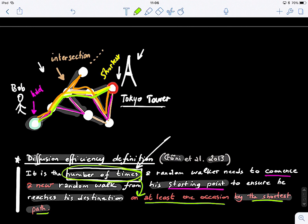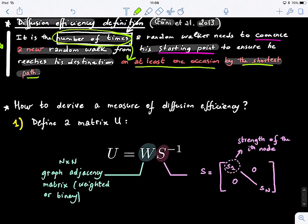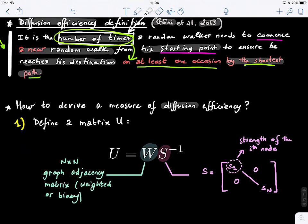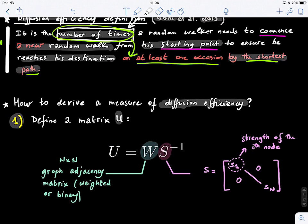There are many ways of formalizing this mathematically. We'll look at this definition and how it is formalized by these authors. The first step is to define a matrix U, which is simply defined as the multiplication of the graph adjacency matrix — whether weighted or binary — by the inverse strength of the node. Here we have a matrix S: if it's a binary graph, this represents the degree, but here it's the strength of the node.